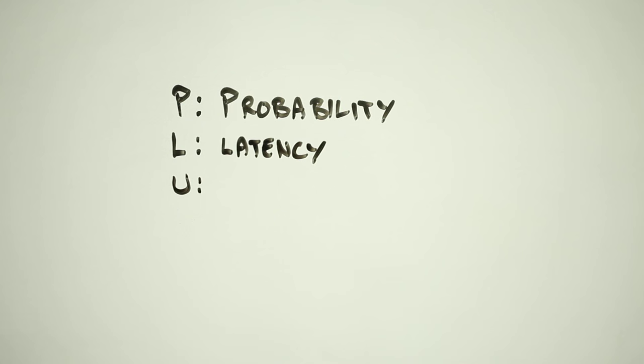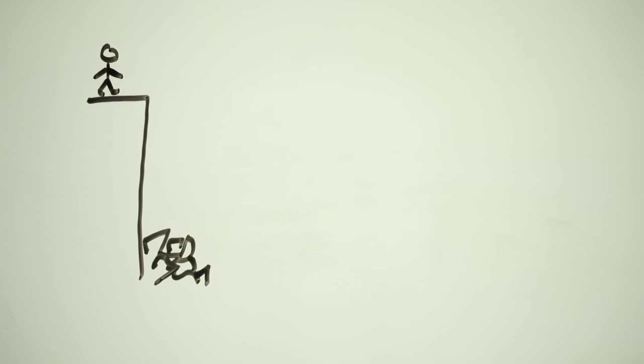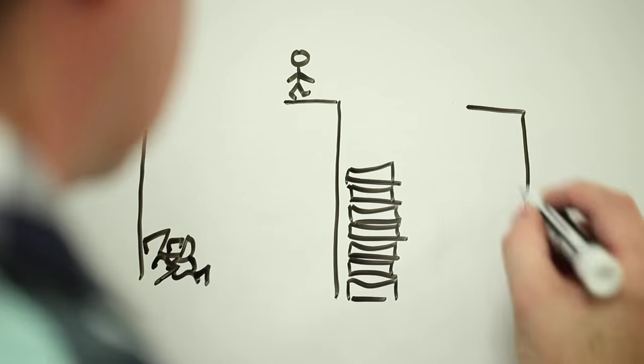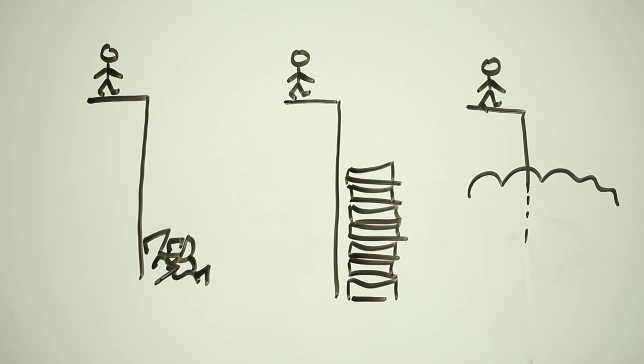Next, we have U. U is for uncertainty. Sometimes we can predict the probability of something bad happening. Sometimes we can make an educated guess. And sometimes it's anyone's guess what's going to happen next.